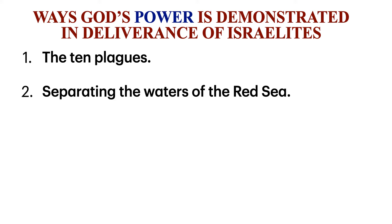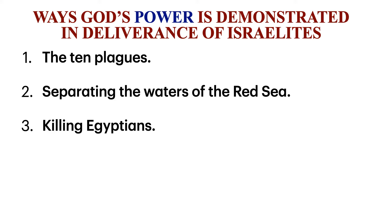Another way that God's power is demonstrated is in the killing of the Egyptians during the crossing of the Red Sea. After the Israelites crossed on dry land, Pharaoh's soldiers who had also reached the sea began to cross. When they reached the middle of the sea, the water began to flow back and fill the path the Israelites had used. The chariots and horses could not move, and they tried running back but it was not possible. God told Moses to hold out his hand over the sea and the waters flowed over the Egyptians until none of them was left alive.